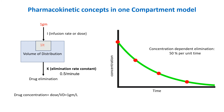So at time zero, the concentration is 1 gram per liter. After one minute, it becomes 0.5 gram per liter. And after two minutes, only 0.25 gram per liter of the drug remains in the plasma. This exponential decline is characteristic of first-order elimination.